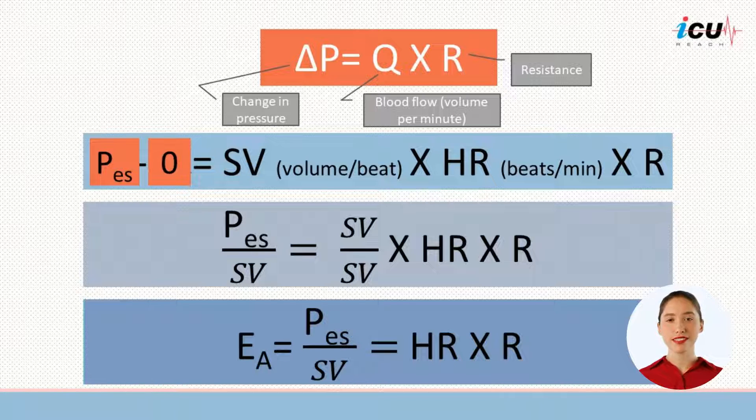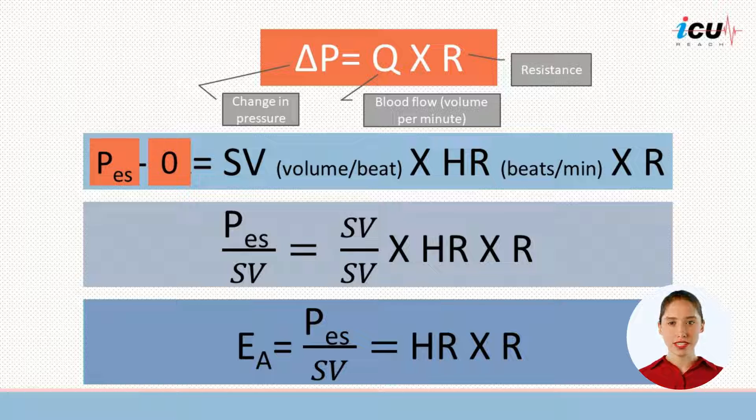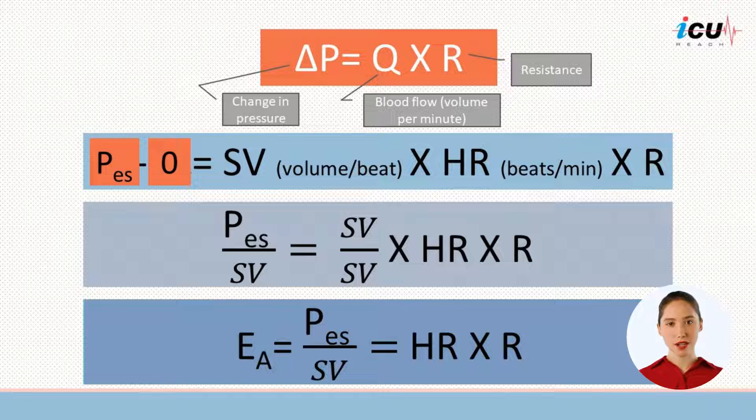Arterial elastance is a measure of the arterial system's ability to withstand and respond to changes in heart rate, blood pressure, and flow during systole. The higher the heart rate or the resistance, the higher the elastance.